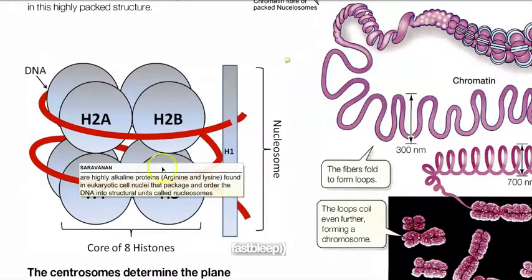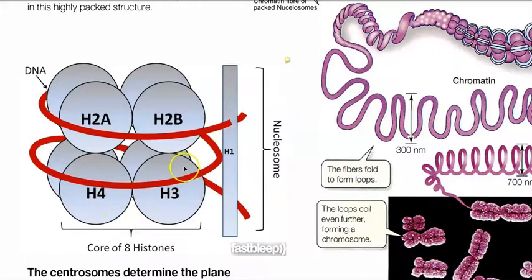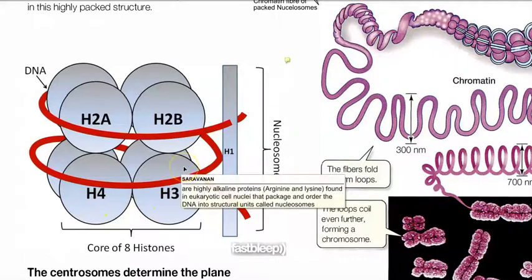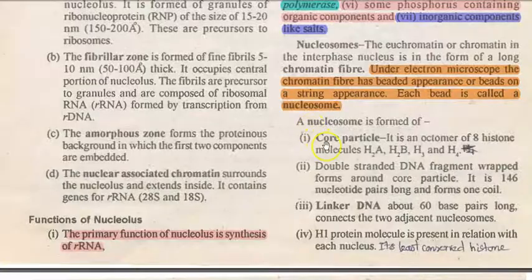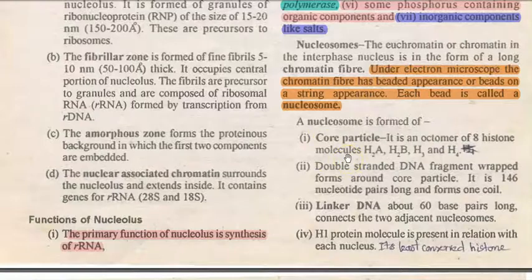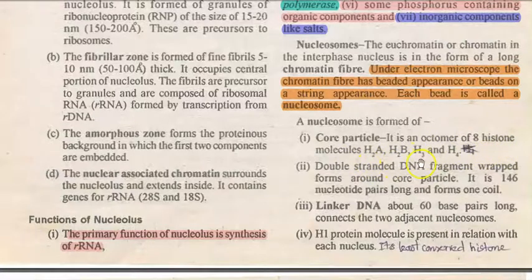This core is made up of 8 histone molecules, which are in turn composed of alkaline proteins — arginine and lysine. The nucleosome consists of a core histone octamer made up of 8 histone molecules: H2A, H2B, H3, and H4 types of histones.